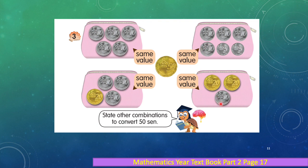The third combination is two pieces of 20 cent coins and one piece of 10 cent coin, which is also the same value as 50 cents. Another way is three pieces of 10 cent coins and one piece of 20 cent coin, also the same value as 50 cents.